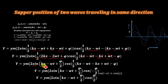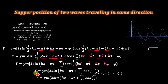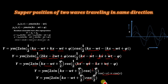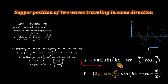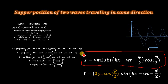We now have y = ym · 2·sin(kx − ωt + π/2) · cos(−π/2). Since cos(−x) = cos(x), we write this simply as cos(π/2). This is the final equation derived for the resultant wave after the superposition of two waves y1 and y2.